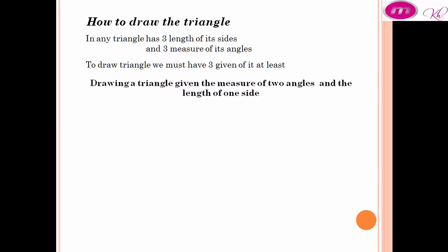Drawing a triangle given the measure of two angles and the length of one side. Draw triangle ABC in which measure angle A equals 40 degrees and measure angle B equals 70 degrees, and AB equals 5 centimeters.